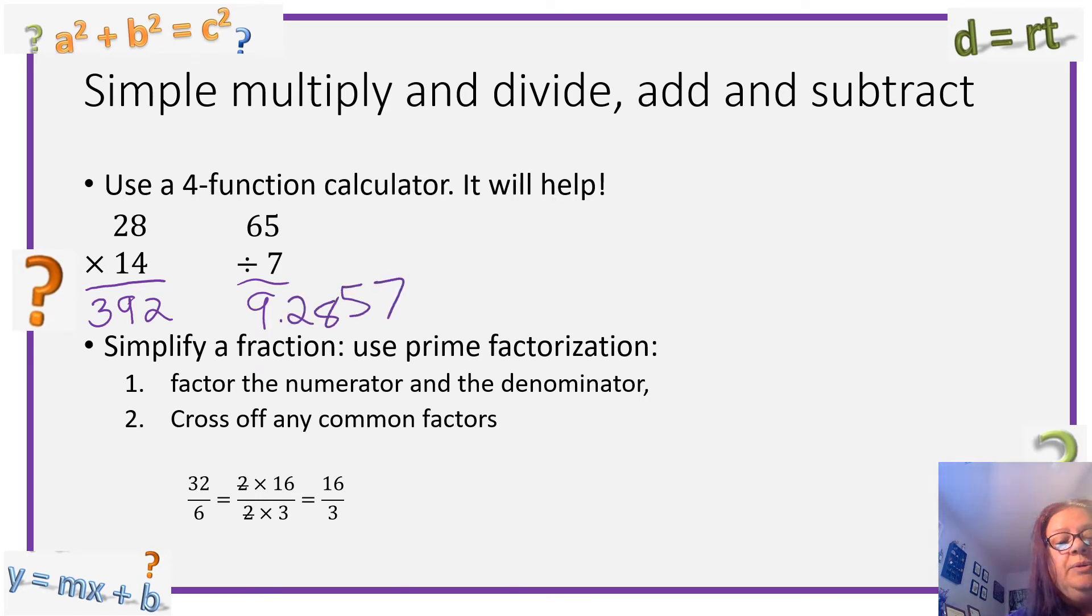65 divided by 7 is 9.2857. Now, if they want the remainder for that, this is going to be 9 with a remainder of... We simply take the decimal portion and multiply it by the 7. What I'm going to do in my calculator, I subtract the 9 off, and now I do a times 7. And I get 2. So the remainder is 2, depending on what kind of answer they want.